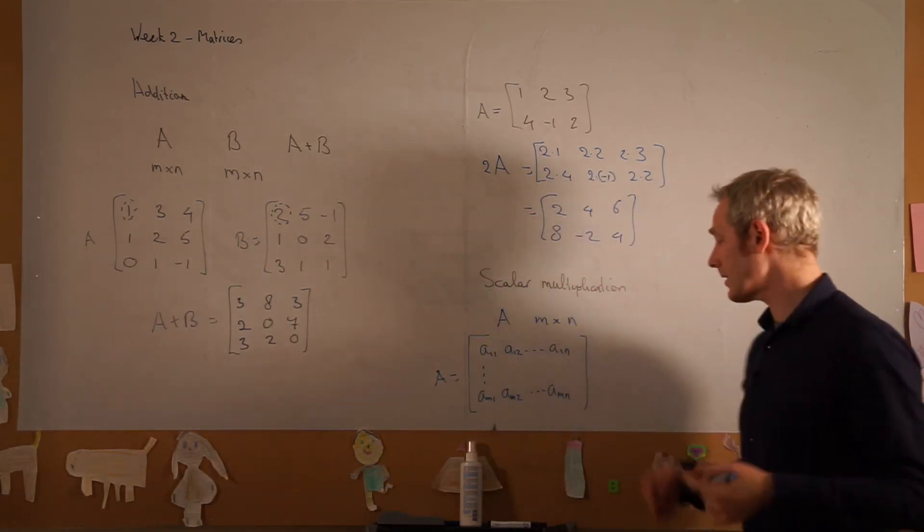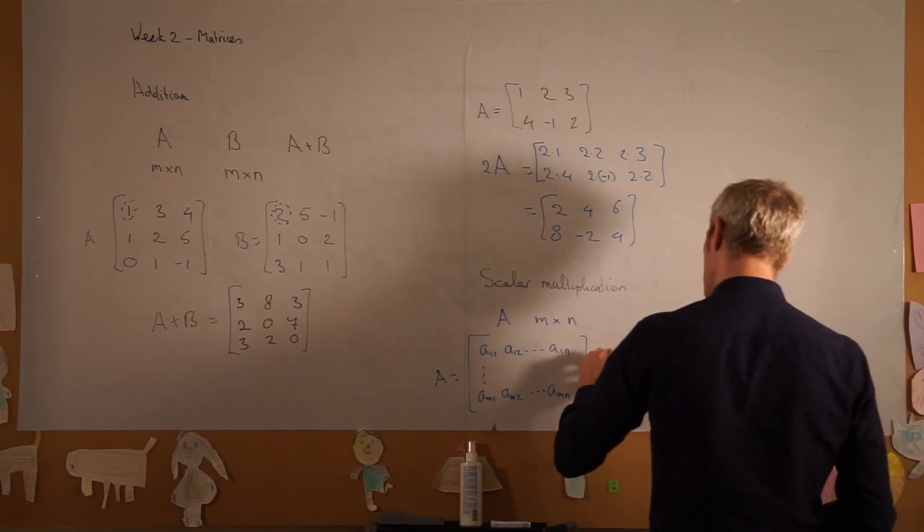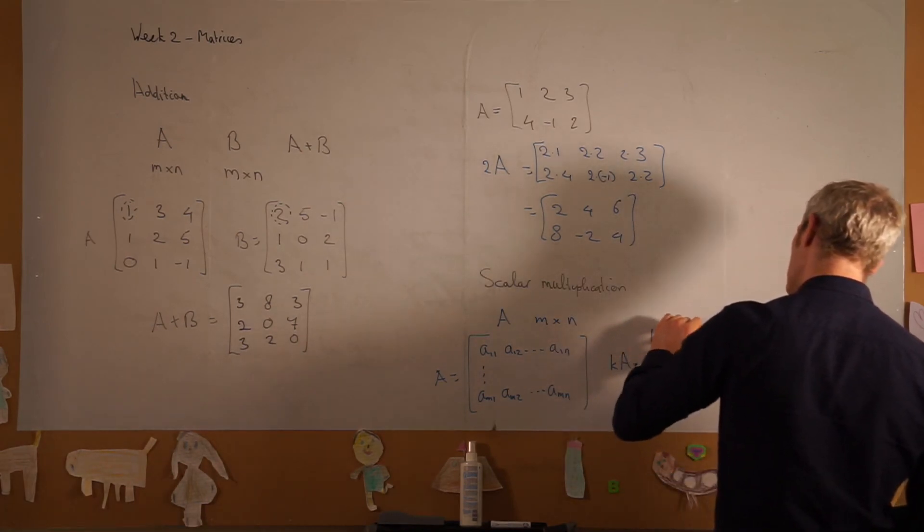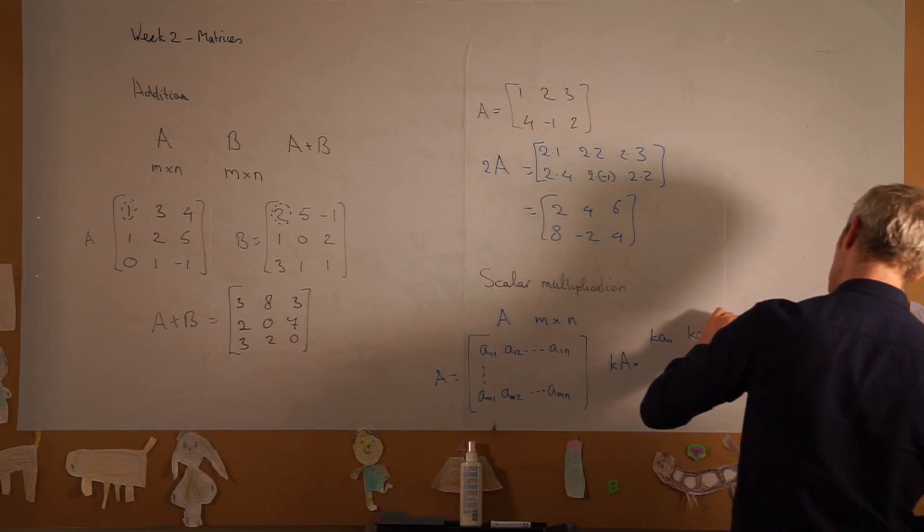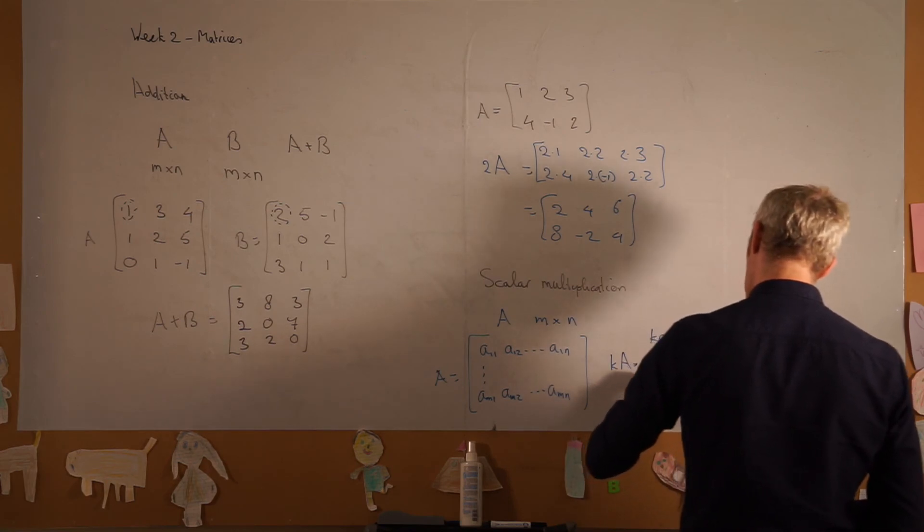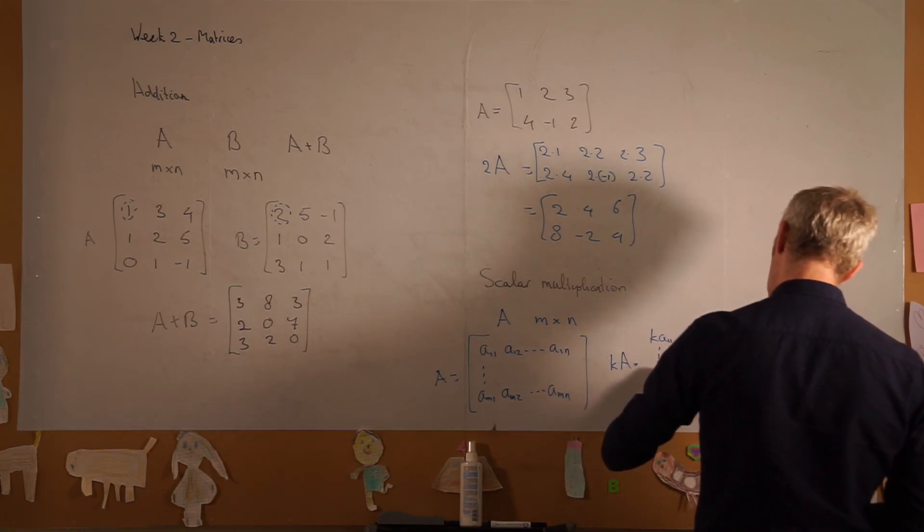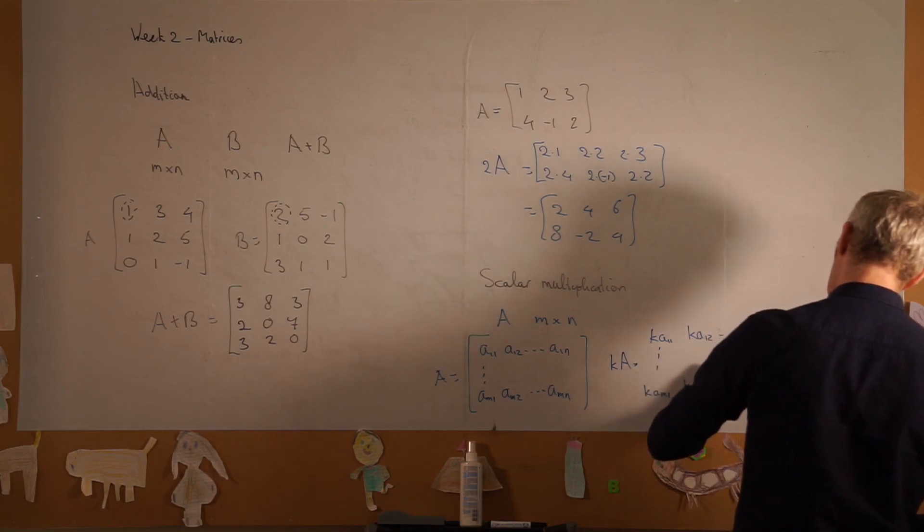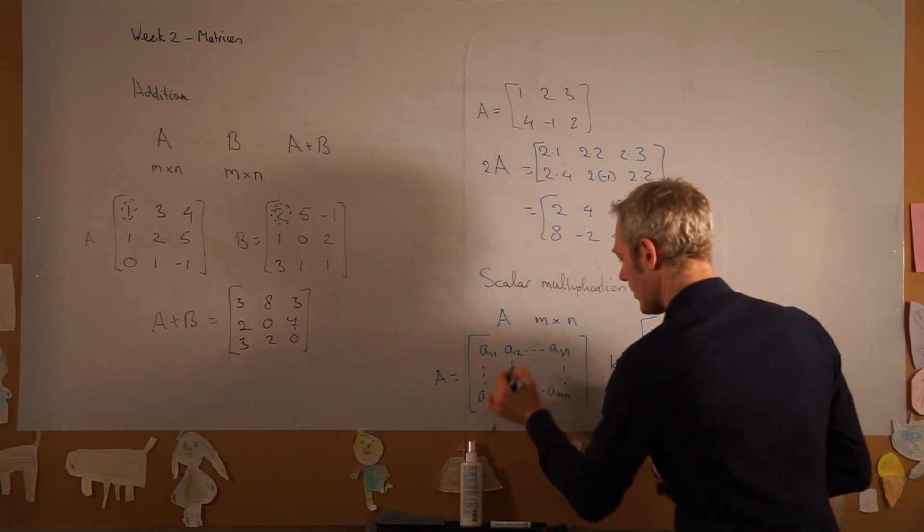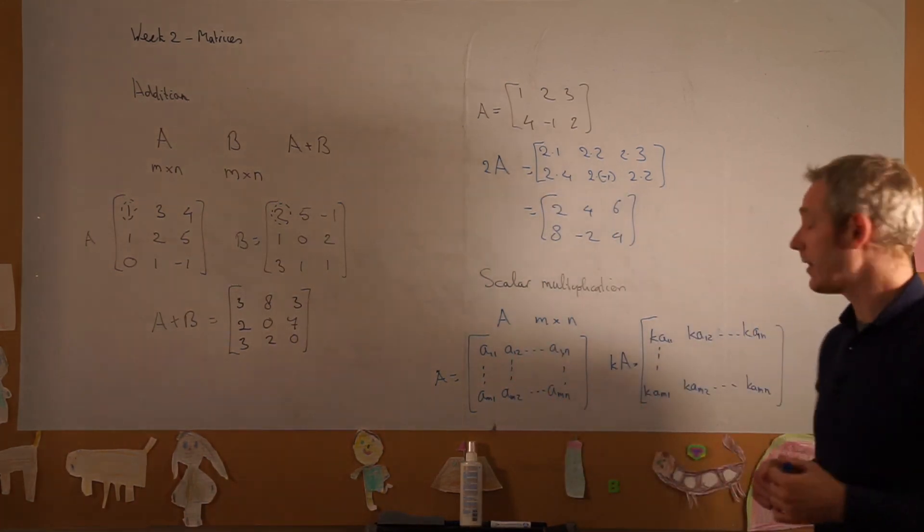then k times A is equal to k·a_11, k·a_12, all the way to k·a_1n, down to k·a_m1, k·a_m2, all the way to k·a_mn, and we have all the elements multiplied by this constant.